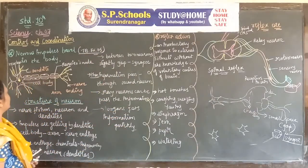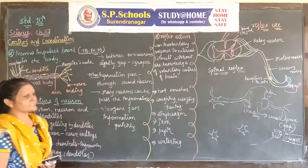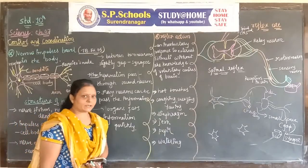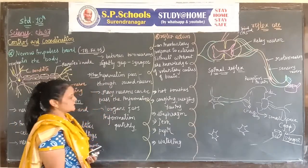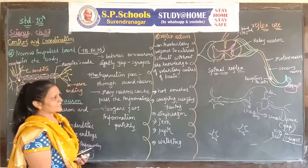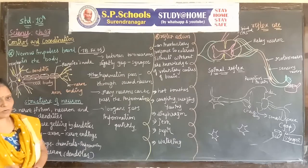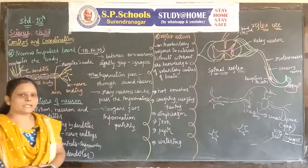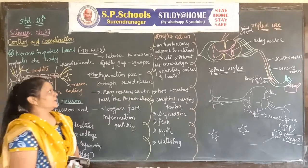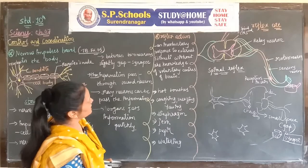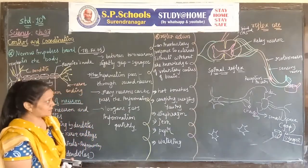Draw the structure of a neuron and explain how nerve impulses travel in the body. Let's go through another point — it is called reflex action. Many receptors can be present in our nose, ear, hands, and skin. They can receive impulses from the outer environment and give an action for it — for example, heat, cold, touch. They get stimuli and give a response. This is called reflex action. Reflex action is an involuntary response to external stimuli without the knowledge of the voluntary centers of the brain.